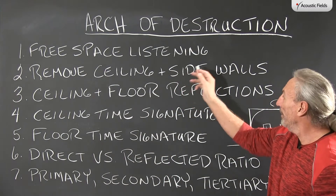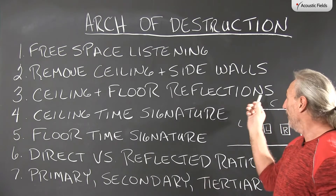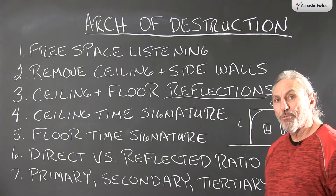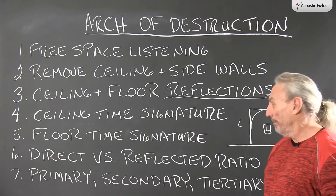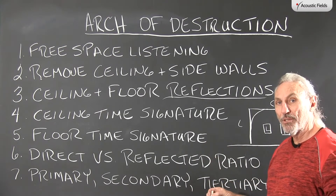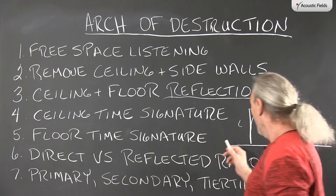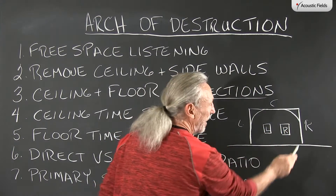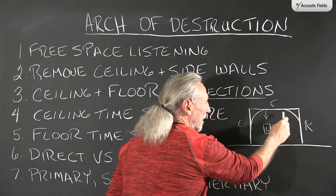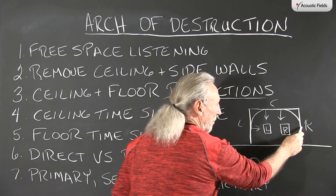By removing the ceiling and the side walls we are going to get a different sound quality. What contributes to all that? It's all about reflections — the time signature of those reflections from the side walls, from our left side wall, from our right side wall, and from our ceiling, all interplaying upon what we are doing.